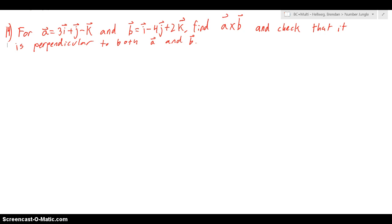The cross product is a way of dealing with vectors in order to find vectors that are perpendicular to both of the starting vectors. In this case, we want to find the cross product a cross b for a equals 3i plus j minus k and b equals i minus 4j plus 2k.